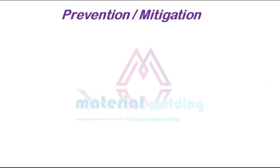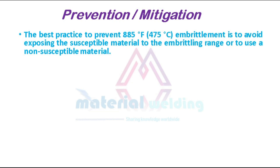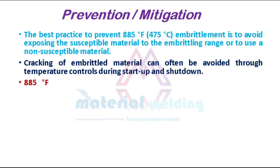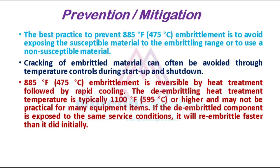The best practice to prevent 885 degrees Fahrenheit embrittlement is to avoid exposing the susceptible material to the embrittling range, or to use a non-susceptible material. Cracking of embrittled material can often be avoided through temperature controls during startup and shutdown. 885 degrees Fahrenheit embrittlement is reversible by heat treatment followed by rapid cooling. The de-embrittling heat treatment temperature is typically 1,100 degrees Fahrenheit or 595 degrees Celsius or higher, and may not be practical for many equipment items. If the de-embrittled component is exposed to the same service conditions, it will re-embrittle faster than it did initially.